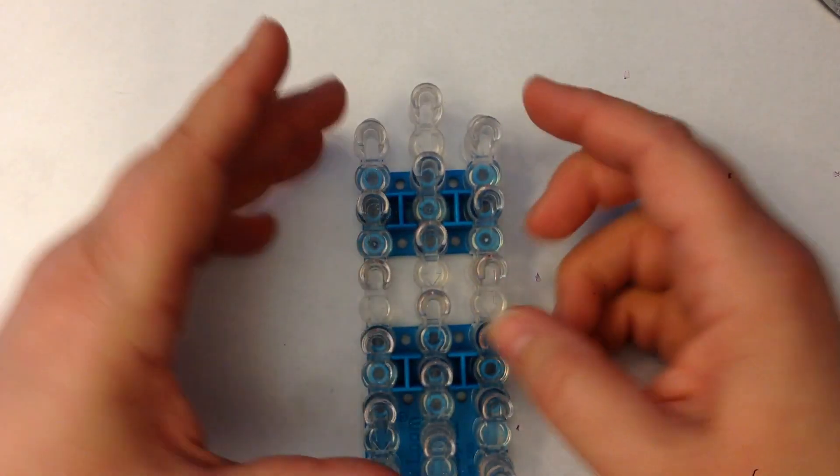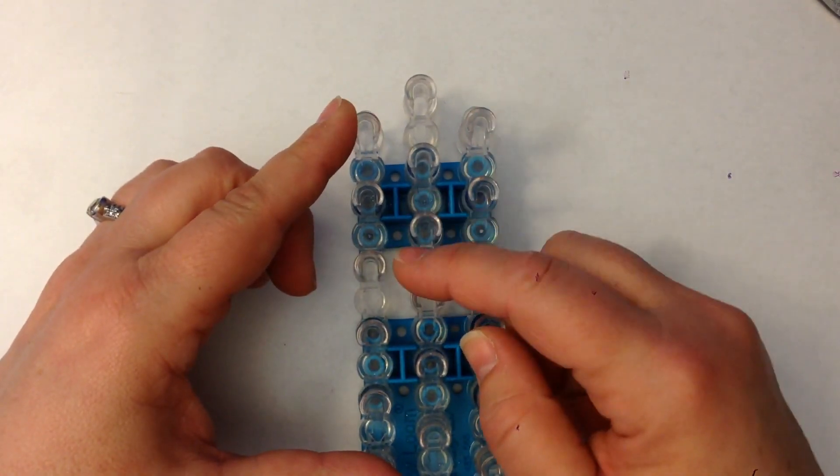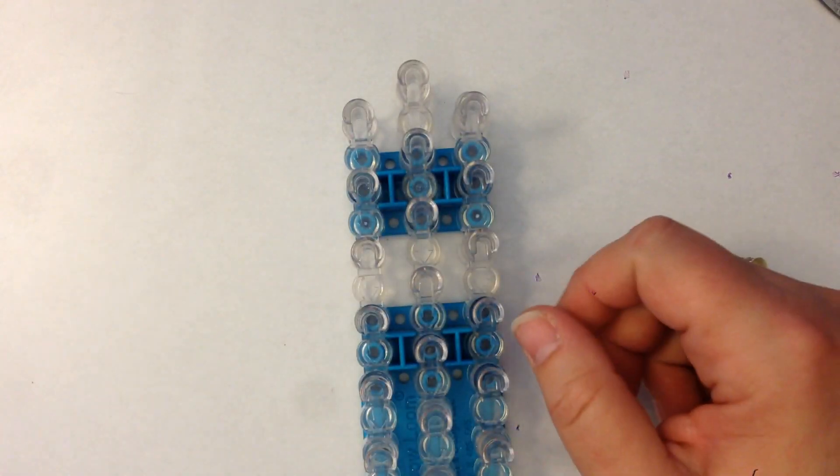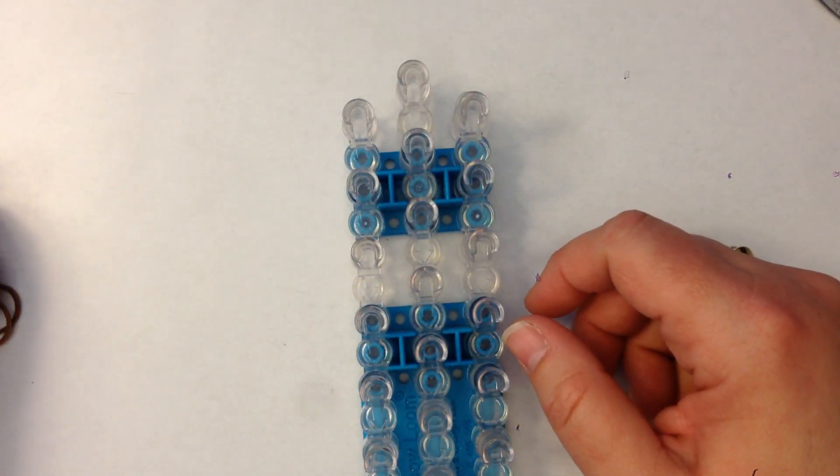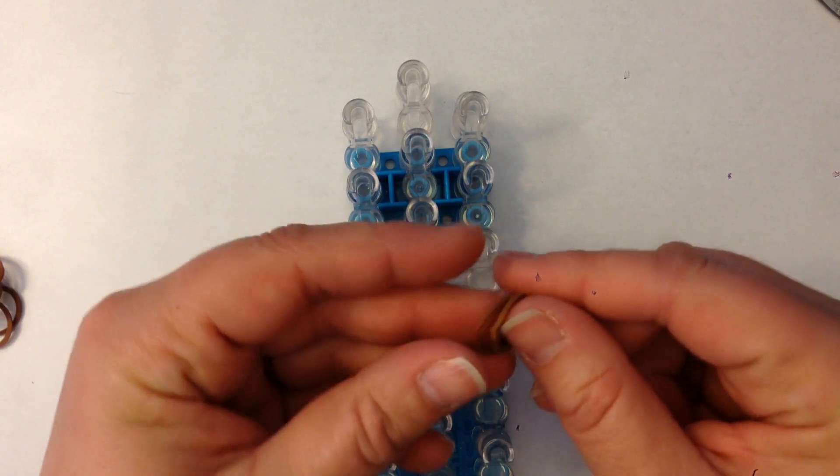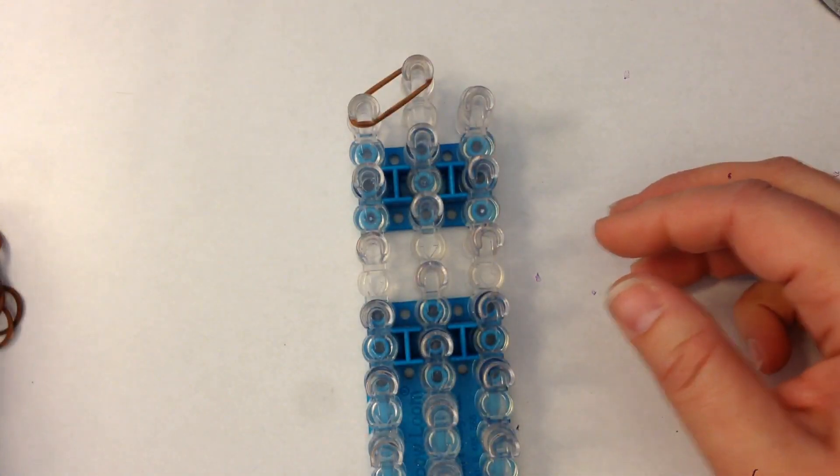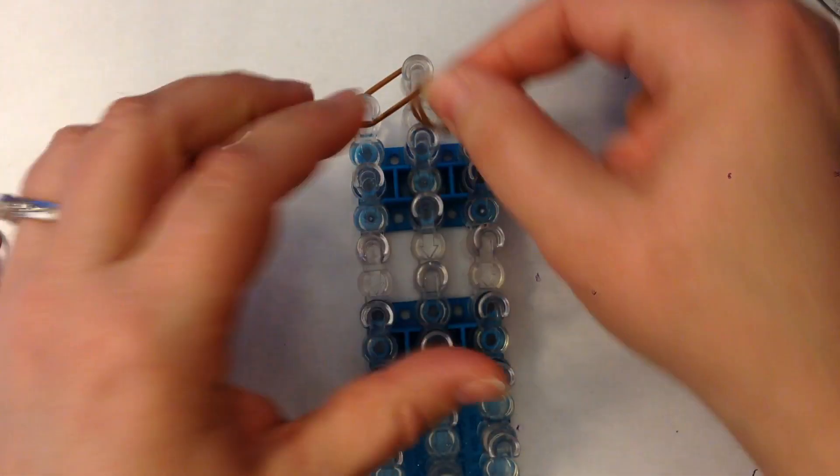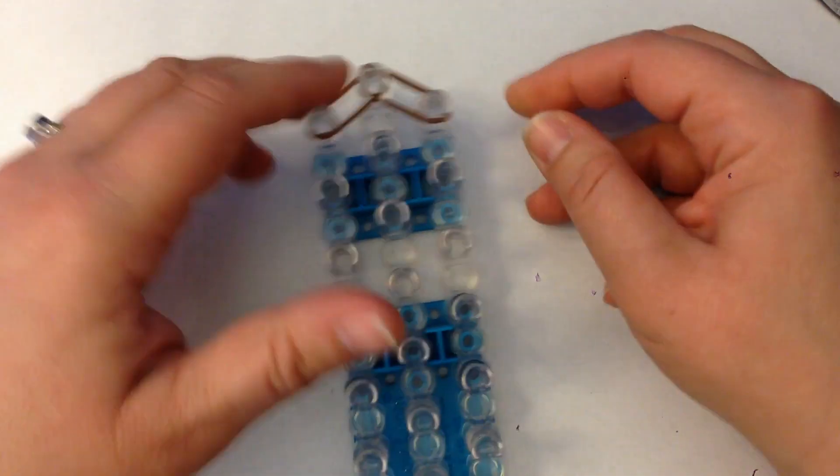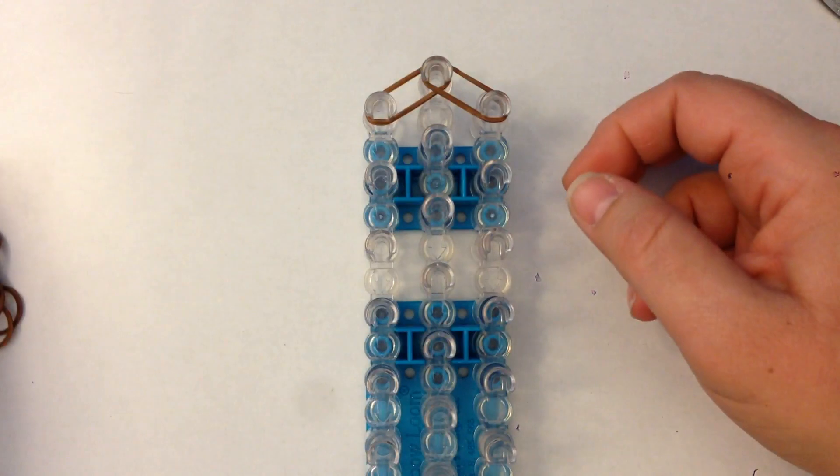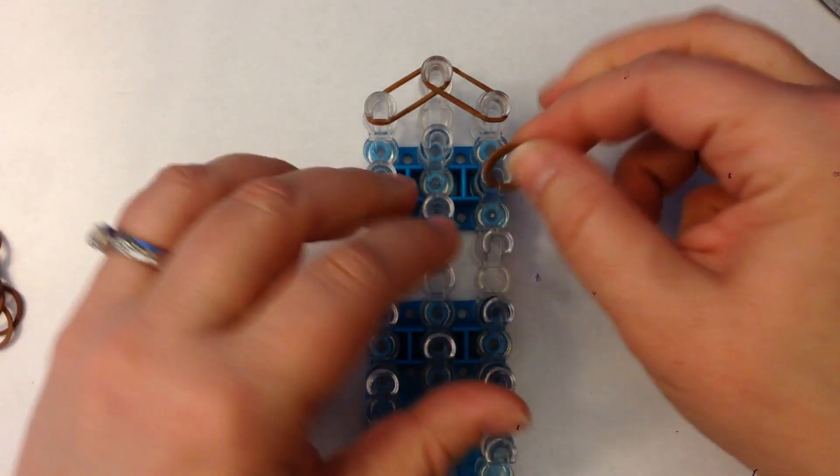Our loom is going to be in the offset configuration, which means that column 1 and 3 are slightly lower than column 2, and we're going to be double banding. Double banding means you take two bands and place them across the peg as if they were a single band like that, so unless otherwise told we will be double banding. Let's get started.